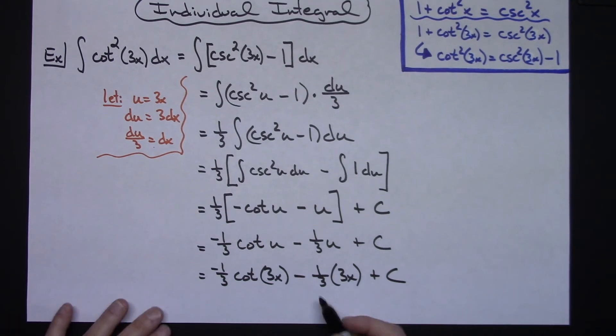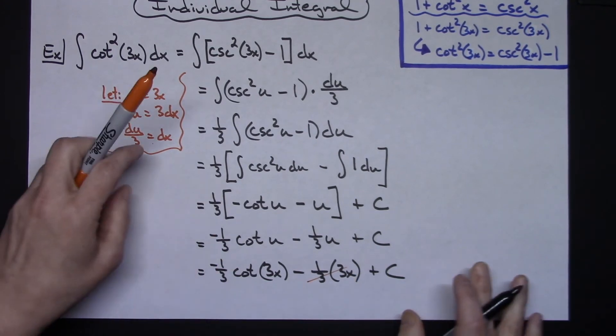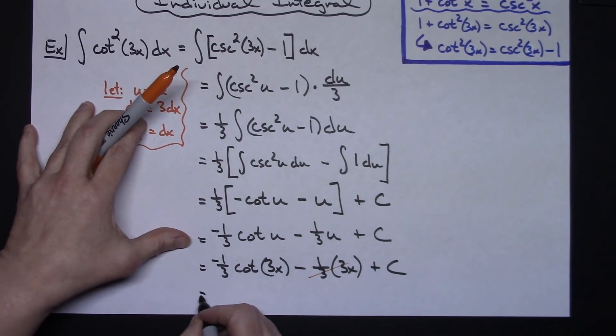Now going one step farther there, 1/3 times 3 is going to cross out so then I can just have a plain x there. So let's go ahead and write that simplified answer there.